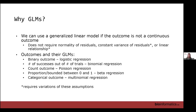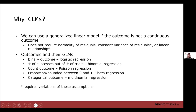Binomial regression is a variation of logistic regression. With logistic regression we have one trial — either you're alive or you're dead. Binomial would be if we have multiple trials, so the number of successes out of the number of trials is our outcome. Then we have Poisson regression for count outcomes, and beta regression, which I have code for you, which is used if you have a proportion bounded between zero and one but don't know the denominator.